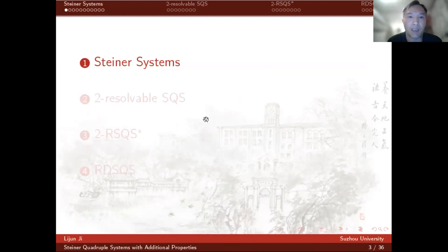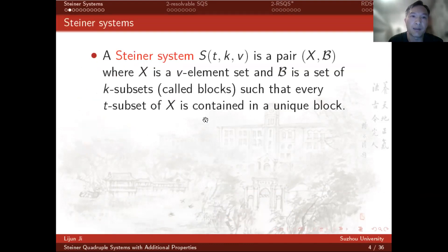Let's look at some definitions. A Steiner system is a pair (X, B) where X is a v-element set and B is a set of k-subsets called blocks, such that every t-subset of X is contained in a unique block.